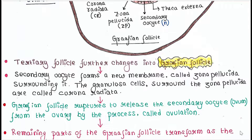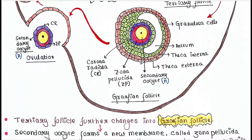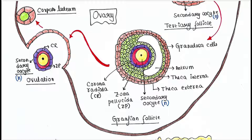The Graafian follicle ruptures to release the secondary oocyte, now called the ovum, from the ovary by a process called ovulation. The Graafian follicle ruptures, and this secondary oocyte comes outside the ovary — this process is called ovulation. The secondary oocyte is a haploid cell surrounded by a layer of zona pellucida as well as the corona radiata.